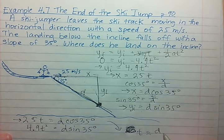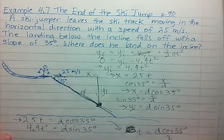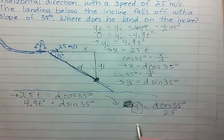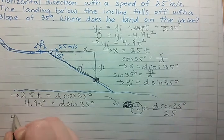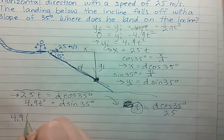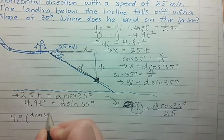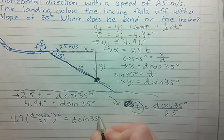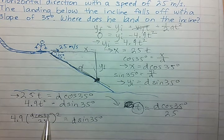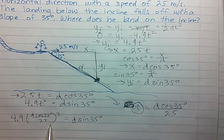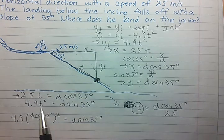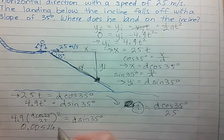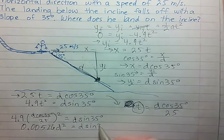t is going to be equal to d cosine 35 degrees divided by 25. Then we can plug this t back into this equation. So 4.9 d cosine 35 divided by 25 squared equals d sine 35 degrees. So if we do cosine of 35 degrees divided by 25, square that, multiply that by 4.9 on this side of the equation, you will get approximately 0.00526 and I am rounding here.